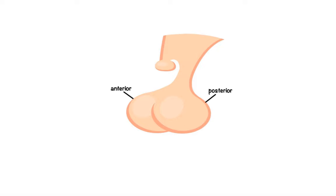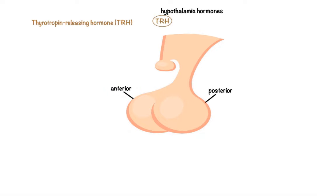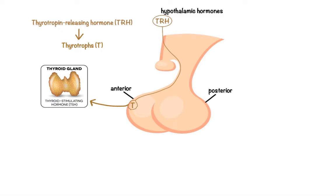Hypothalamic hormones can be broadly classified into two groups. The first group includes the hormones that act on the anterior pituitary gland, such as thyrotropin-releasing hormone, TRH for short, that stimulates specialized endocrine cells called thyrotrophs to release thyroid-stimulating hormone, which in turn stimulates the thyroid gland to produce and release thyroid hormones.